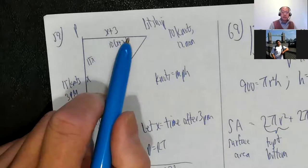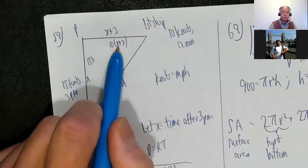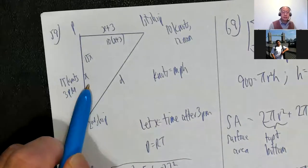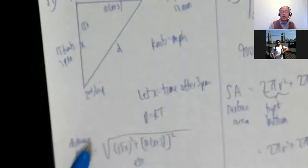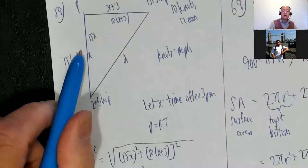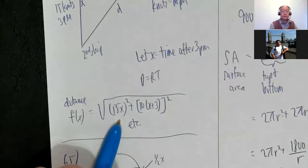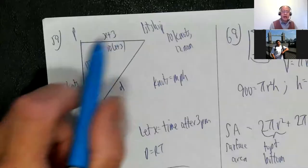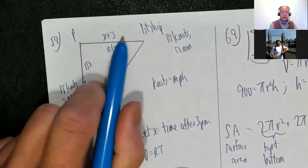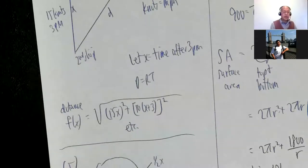What is this distance? It's rate times time. Rate is 10, time is x plus 3. This one is 15 miles per hour times x. So the distance as a function f of x is the square root of (15x)² plus (10(x+3))². That's basically the hypotenuse — distance squared is this thing squared plus this thing squared. 10 times (x plus 3) and 15x squared. You'll finish the rest of that one up.